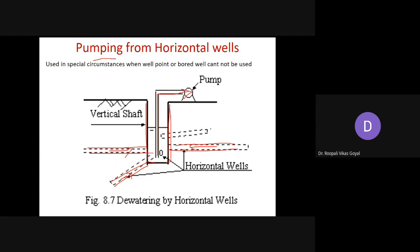In the next part we are going to discuss further methods widely used for dewatering in excavation. This first part covered what dewatering is and different methods: simple pumping, sump and ditches, deep well, shallow well, and horizontal well — how they are useful in lowering the groundwater table and keeping your construction site dry. In the next part we will discuss many more methods. Thank you very much.